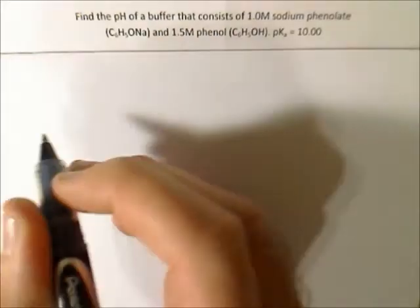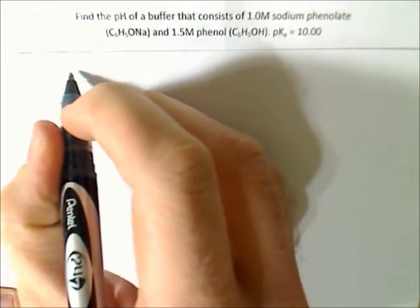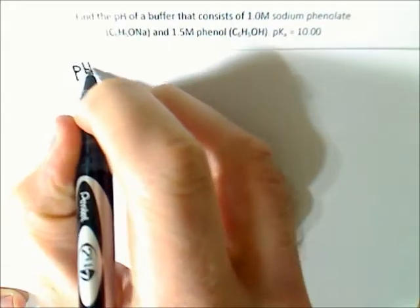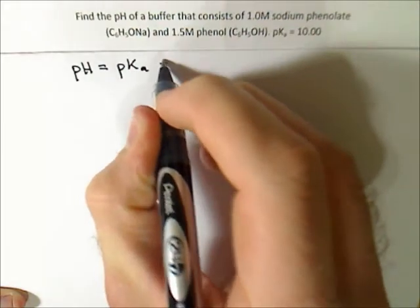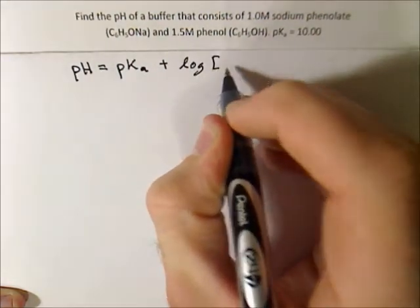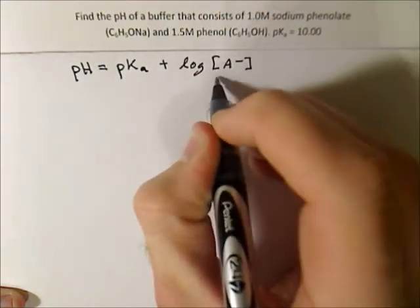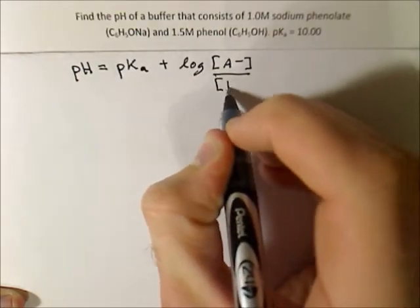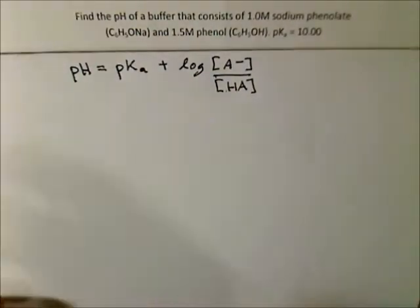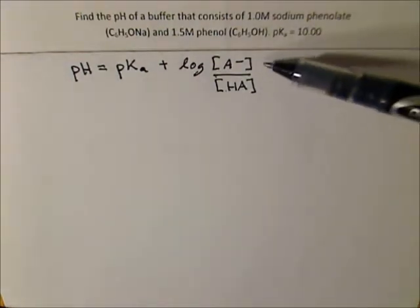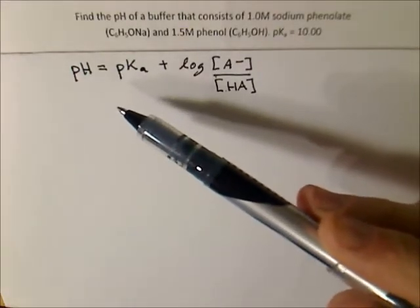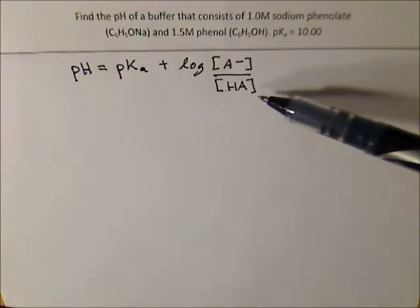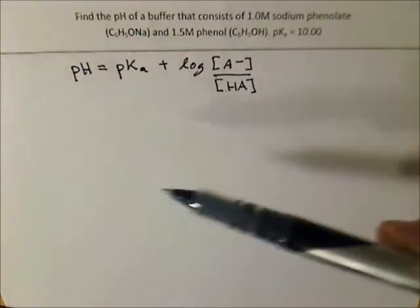Alright, so with all the buffer problems, we're going to be using the same equation, the Henderson-Hasselbalch equation. Looking at this equation, you can see that if your base concentration increases, then your overall pH should increase. It should become more basic, and if you increase the acid concentration, your pH should decrease.